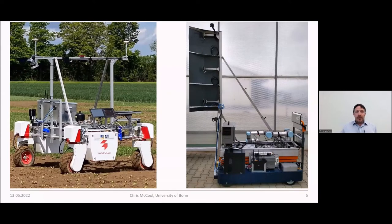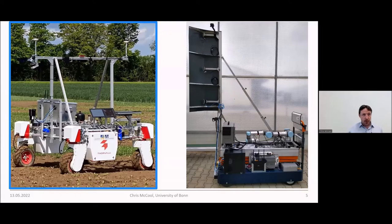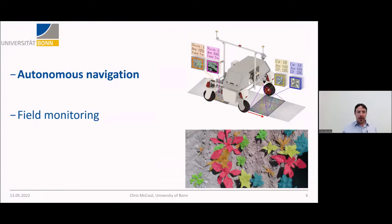I'm going to talk in the context of two particular robotic systems. You're going to see BondBot on the left hand side — the weed management platform — and also Padobot in the glasshouse environment in the second half of this presentation. For both of these robots, I'm going to talk first about autonomous navigation, which is a really important aspect, and then about field monitoring as applied to both BondBot and Padobot, both in the arable farming scenario and the glasshouse scenario.